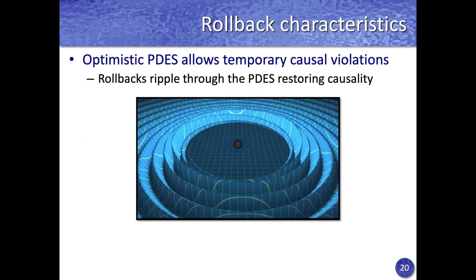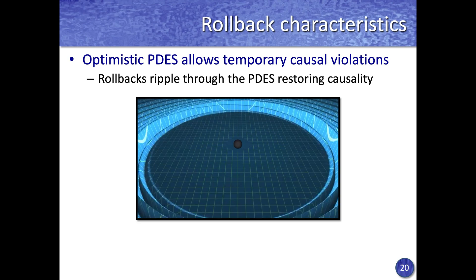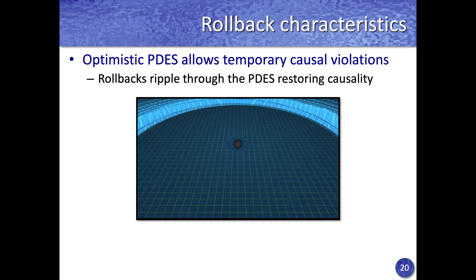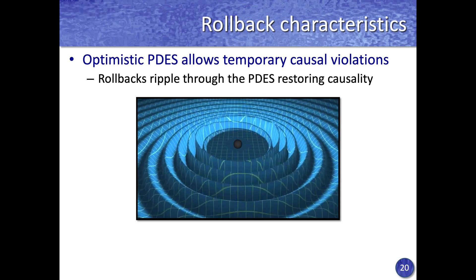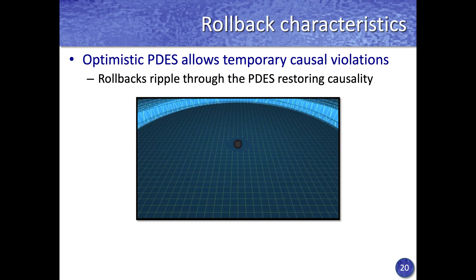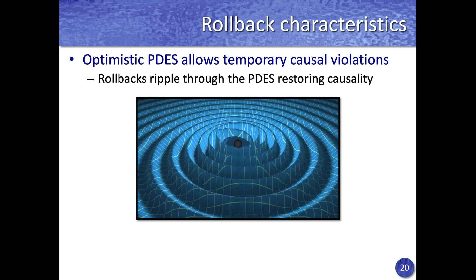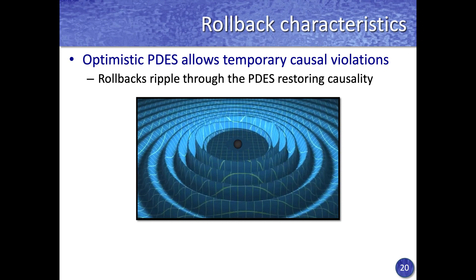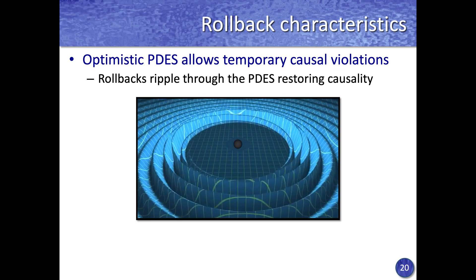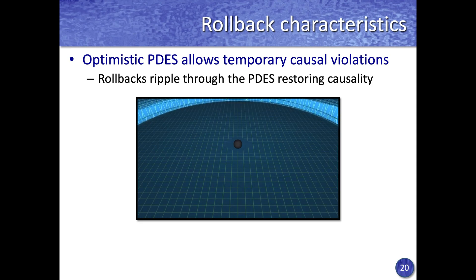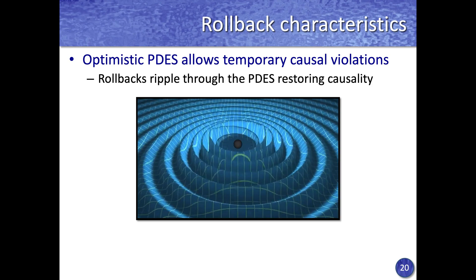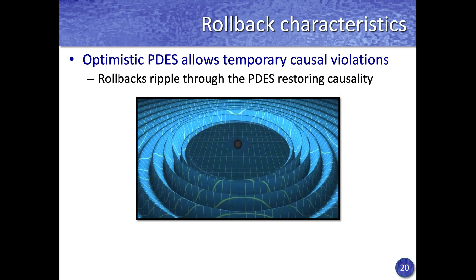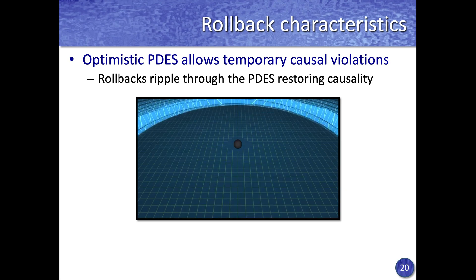When a rollback occurs in an optimistic simulation, rollbacks ripple through the simulation restoring causality. This ripple happens because anti-messages are sent from one logical process to another, and these restore causality in the system.